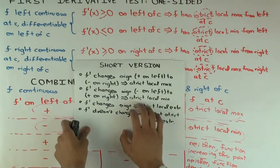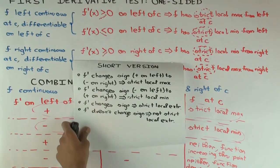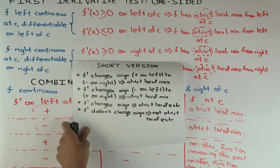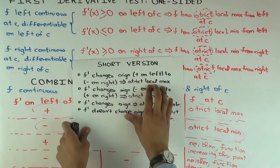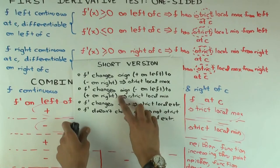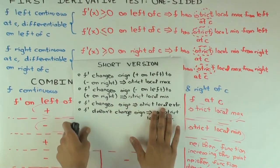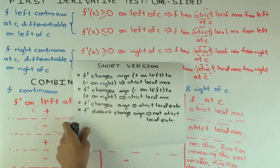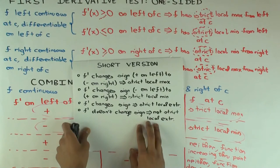So what's a quick way of saying it without invoking any algebraic letters? If the derivative changes sign from positive to negative, positive on the left and negative on the right, you have strict local max. Negative to positive, strict local min. If it changes sign, you do have a strict local extrema, depending on the nature of the sign change. And if it doesn't change sign, you don't have a strict local extrema.